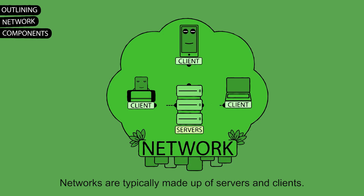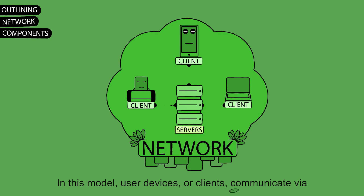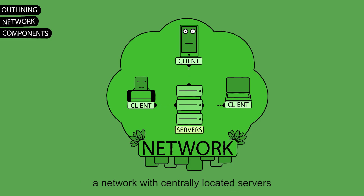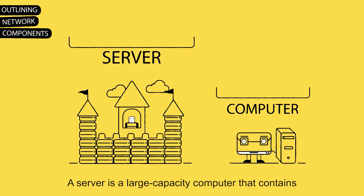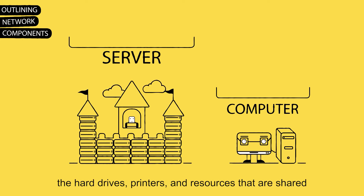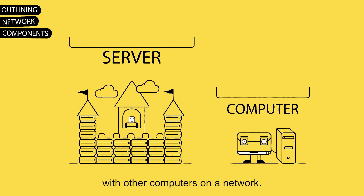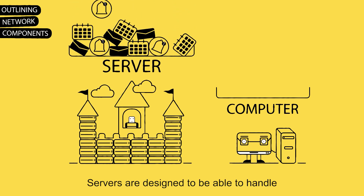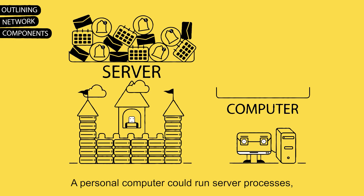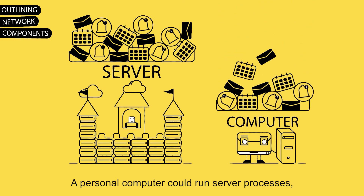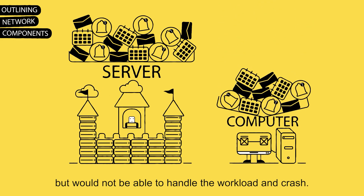Networks are typically made up of servers and clients. In this model, user devices or clients communicate via a network with centrally located servers to get the resources they need. A server is a large capacity computer that contains the hard drives, printers, and resources that are shared with other computers on a network. Servers are designed to handle more intensive workloads than a personal computer can — a personal computer could run server processes but would not be able to handle the workload and would crash.